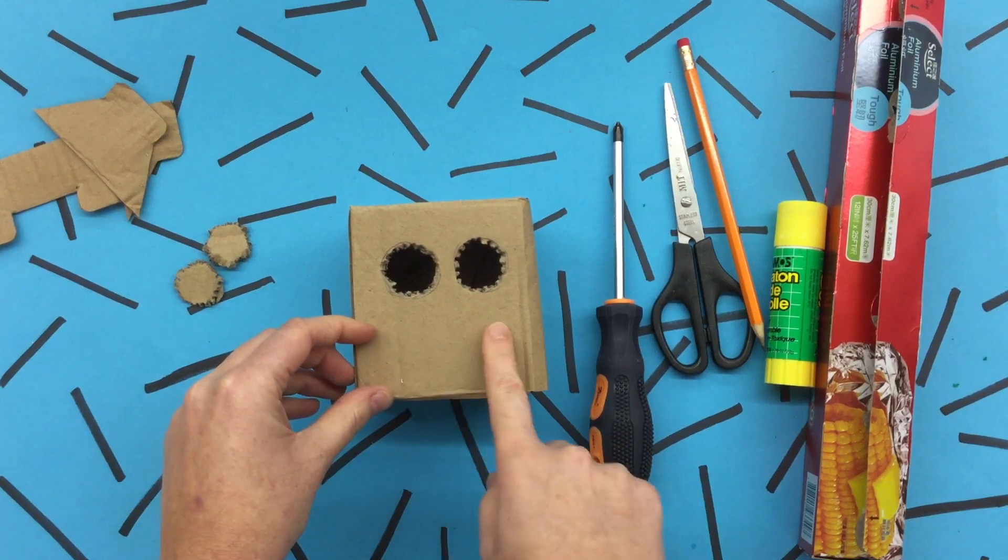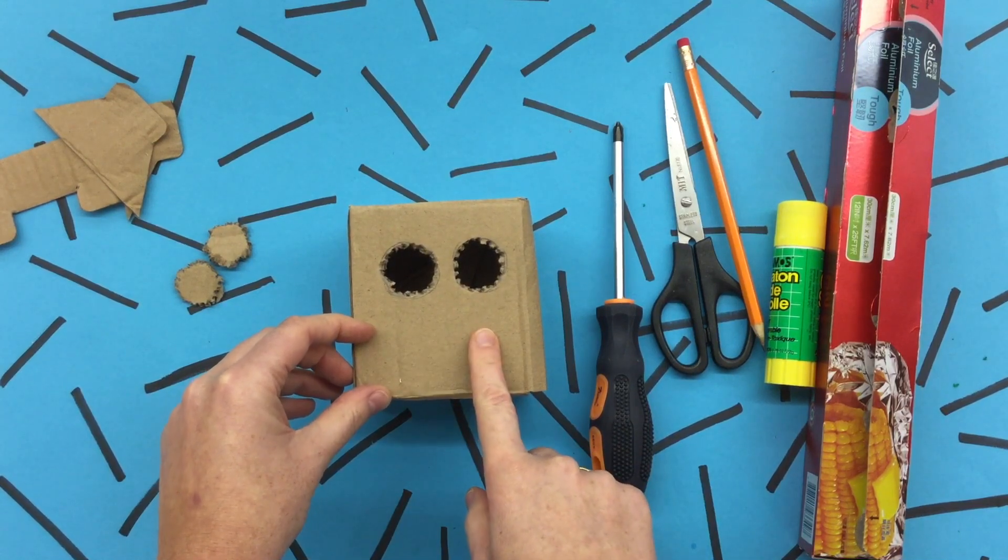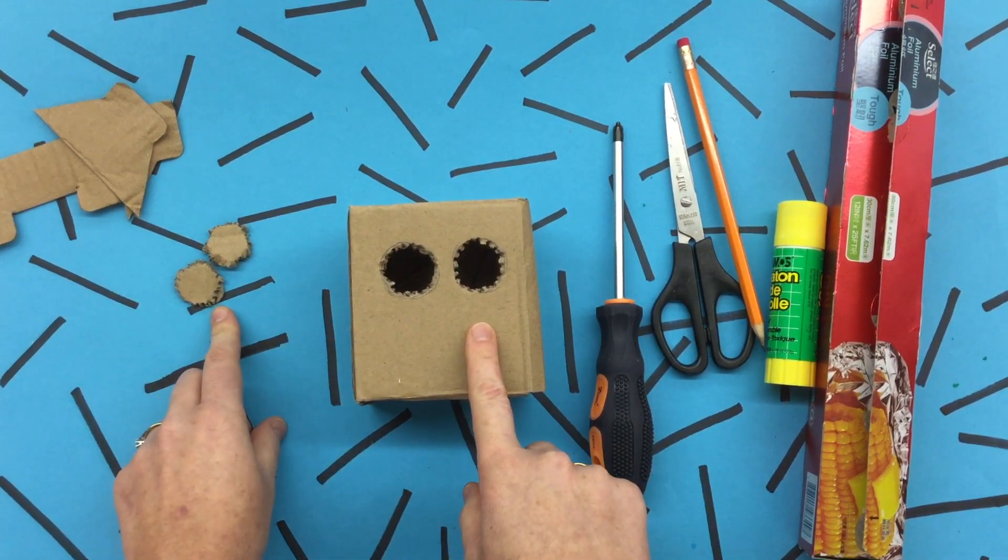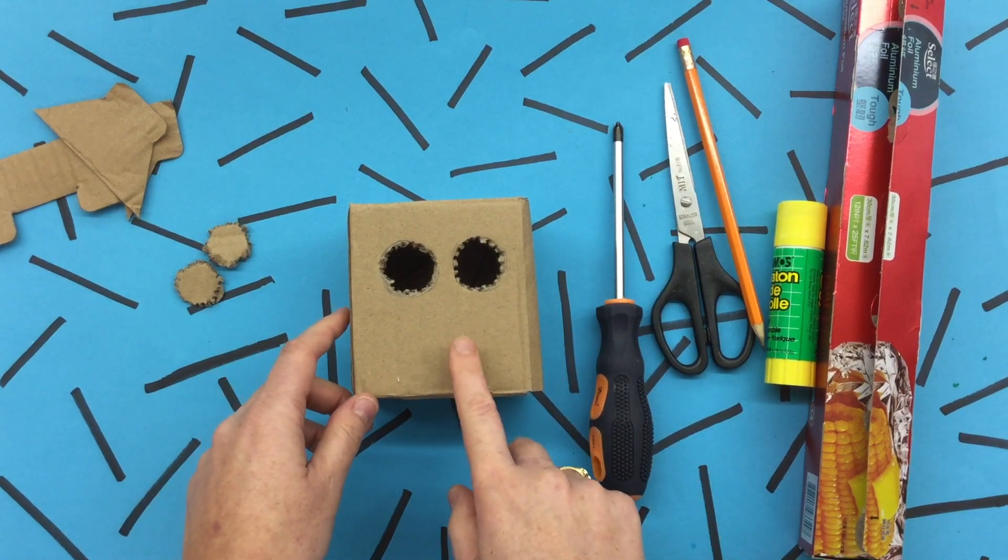If you want, you can also make a rectangle or a shape for the mouth and do the same thing by using the pencil or the screwdriver to poke out.